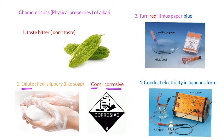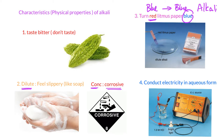Third, alkaline turns red litmus paper blue. Remember, if it turns red that indicates acid. If the paper turns blue — from red to blue — that indicates alkaline. If you put a blue litmus paper in it, it remains blue. Fourth, alkaline can conduct electricity in aqueous form, just like acid, because it has mobile ions. So we also call alkaline a kind of electrolyte.